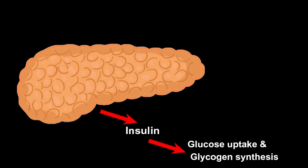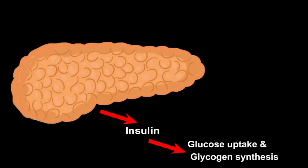How does our body maintain a normal blood glucose level? Glucagon and insulin are the two hormones involved in maintaining a normal blood glucose level. The pancreas is monitoring the level of glucose in blood circulation. When blood glucose levels fall, the alpha cells of the pancreas secrete glucagon, which breaks down glycogen into glucose.